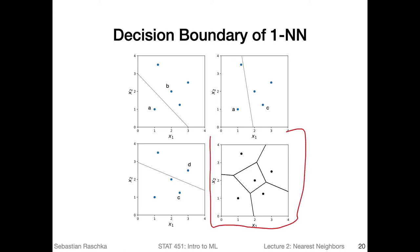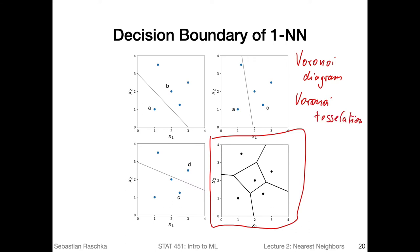In the bottom right corner, we have the decision boundary for the one nearest neighbor classifier. If you look at this diagram, you've probably seen something like this before — this is called a Voronoi diagram or Voronoi tessellation. We're basically dividing up the dataset such that for each pair of points, the boundary lines are where every point on the line is equidistant to the two neighboring points.